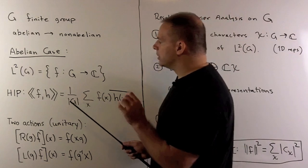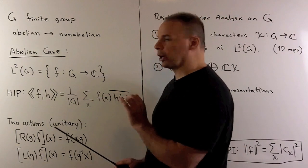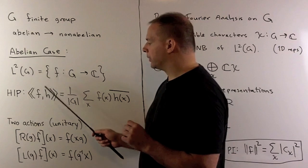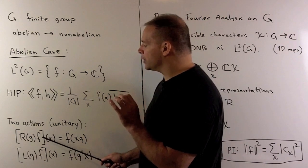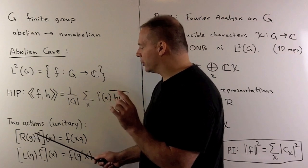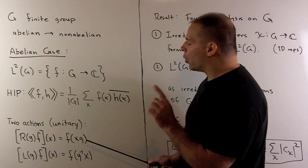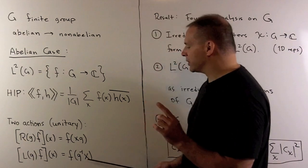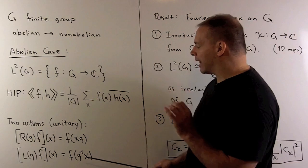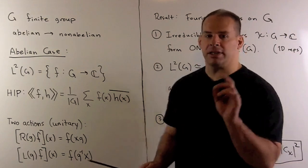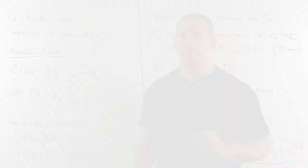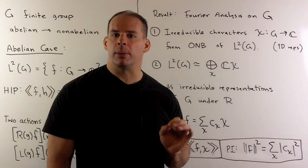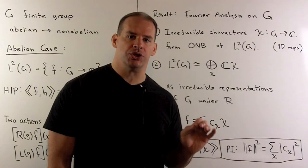To get representation theory into the picture, I have two actions on L2 of G. We can act on functions by a group element by acting on the variable on the right, or we can act on the variable by the group element on the left. Note: if you're going to act on the left, you have to put in an inverse to get a representation. Using either group action, we obtain a unitary representation of G on L2 of G.